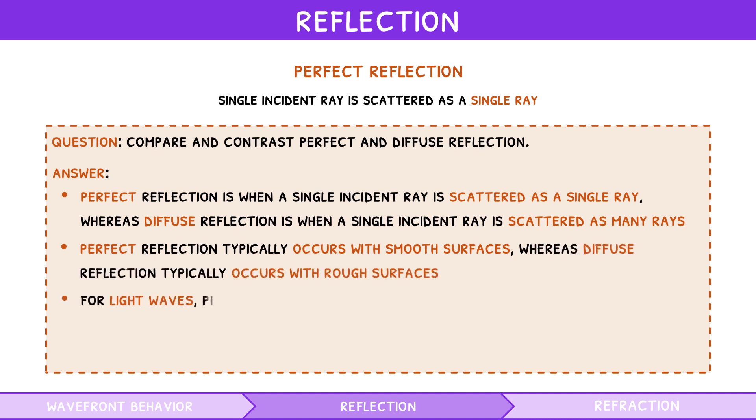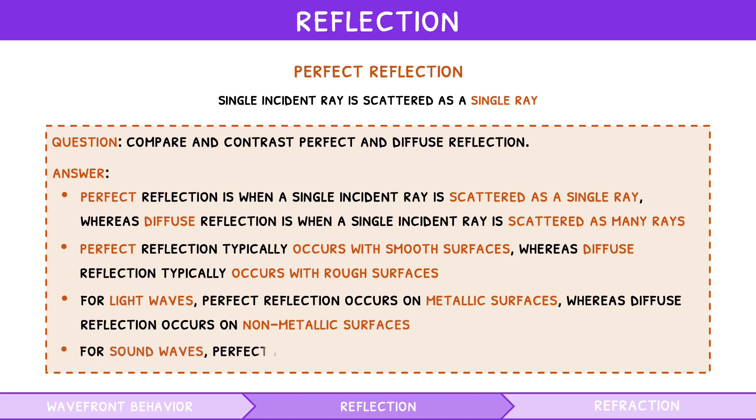For light waves, perfect reflection occurs on metallic surfaces, whereas diffuse reflection occurs on non-metallic surfaces. For sound waves, perfect and diffuse reflection both occur on hard surfaces.